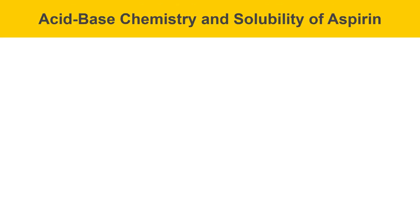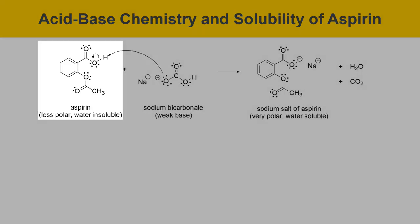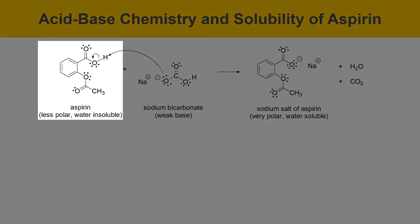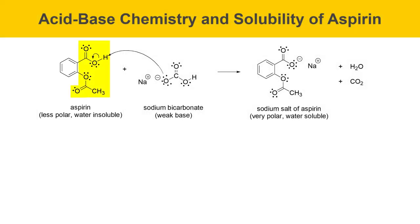On this slide I'm going to talk about the acid-base chemistry and solubility of aspirin. The structure of aspirin is shown here on the left. Aspirin is a less polar, water-insoluble compound because, although it has some polar functionality, it also has a benzene ring and a lot of nonpolar functionality that dominates the solubility characteristics of this molecule.